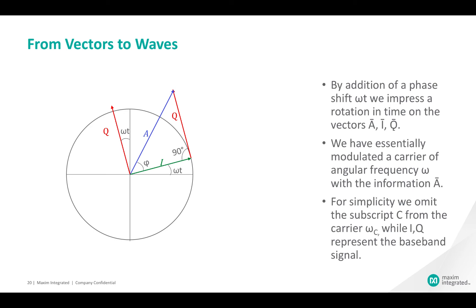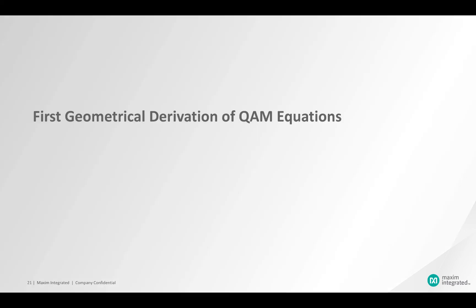And the tangent of φ equals q over i. With the addition of the phase shift ωt, we impress a rotation in time on the vectors a, i, and q. We have essentially modulated a carrier of angular frequency ω with the information in vector a. For simplicity, we have omitted the subscript c from the carrier ωc, while i and q represent the baseband signal.